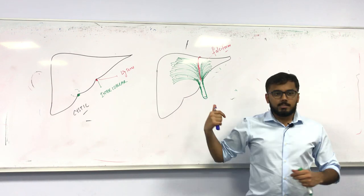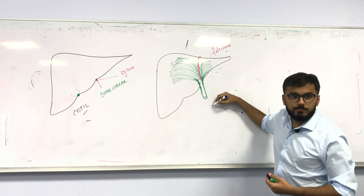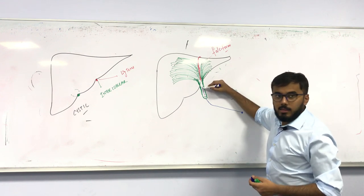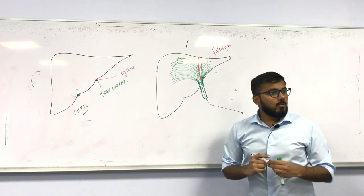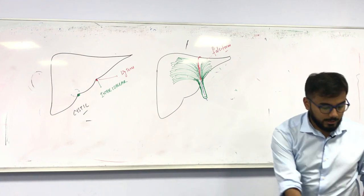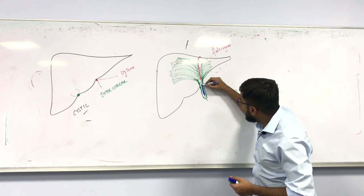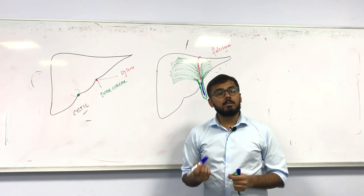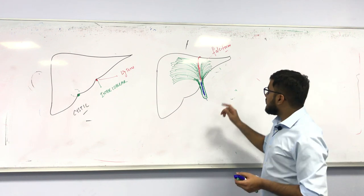During embryonic development, the umbilical vein enters this narrow sheath and passes to the back side of the liver. As development proceeds, this umbilical vein starts to degenerate. The remaining part becomes condensed and thick, eventually forming a ligament called ligamentum teres. So, ligamentum teres is a remnant of the umbilical vein.